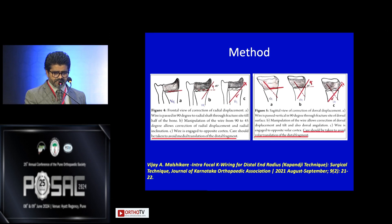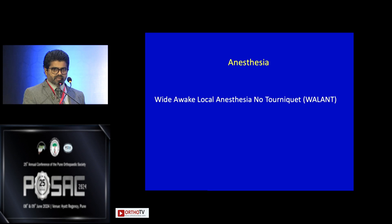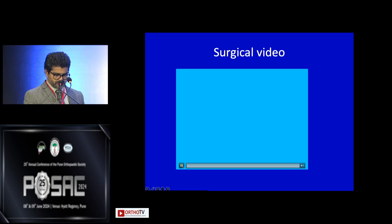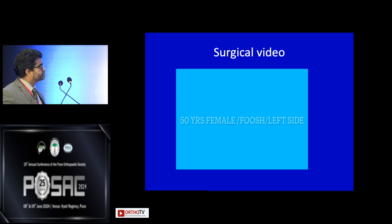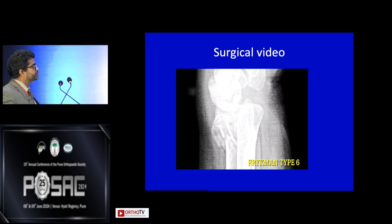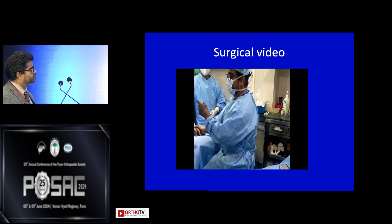For anesthesia, we now use wide awake local anesthesia with no tourniquet as a day care procedure. This is a surgical video demonstrating the technique on a 50-year-old female who had a fall on an outstretched hand on the left side. The X-ray shows a frequent type 6 classification of this distal radius fracture. Surgery is performed under block with the surgeon sitting comfortably on a stool.